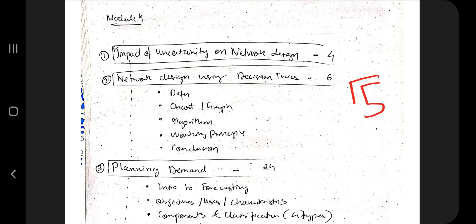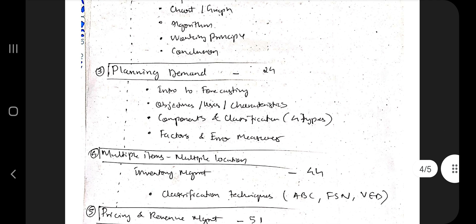There are five theory topics. The first one is the impact of uncertainty on network design. What does uncertainty mean? We are not being sure of what is going to happen, right? So how does that impact the network design? That's the key point there. Network design using decision trees - just know the theory, make the graph, and write the algorithm for it. Give an example. Then we have the planning demand - what are the different key factors, introduction to forecasting, objective users and characteristics, components and classification. There are four types in it.